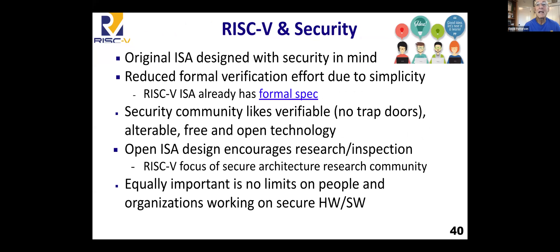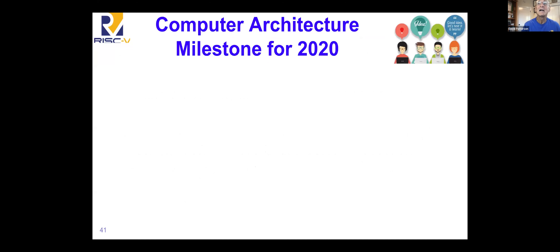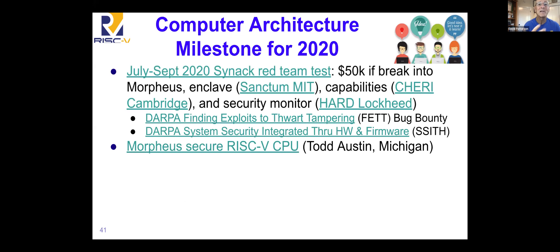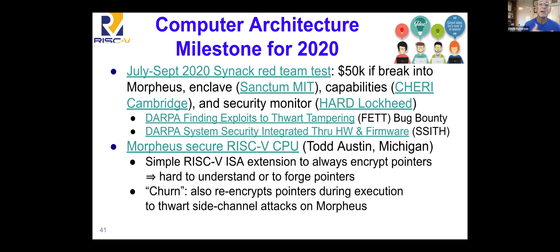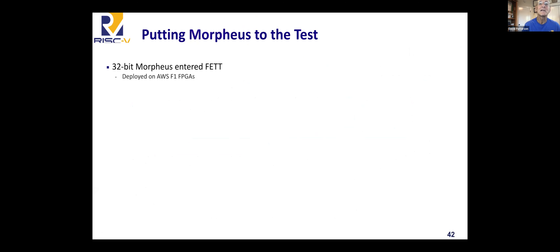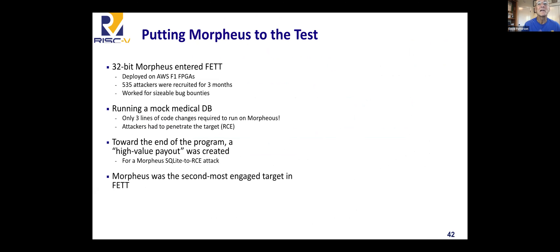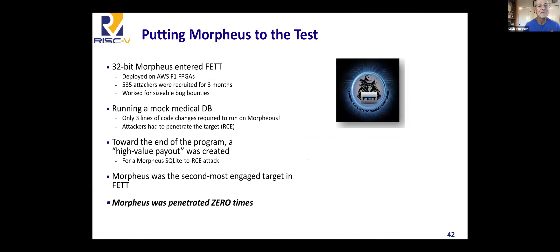RISC-V and security — it's popular in that group because it's open, it has a formal spec, and there's no limbus who can work on it. DARPA decided to do a competition where they compare a lot of different security schemes: enclaves, capabilities, security monitors, and this idea from Morpheus, which is out of Todd Austin's group at the University of Michigan. What Austin does is always encrypt the pointers and then re-encrypt them frequently. They offered $50,000 to break in, ran a red team attack, and hundreds of people were attacking. Morpheus — nobody broke into Morpheus. That's an encouraging sign that there's actual hardware innovation that hackers couldn't break, and that's the most uplifting story I've heard in this area.